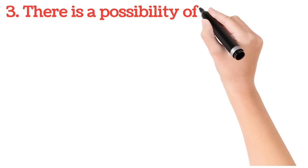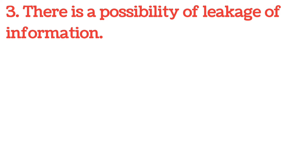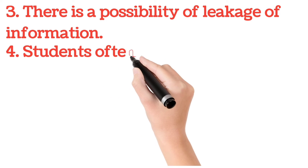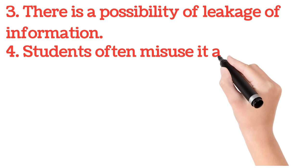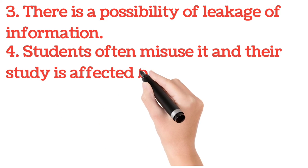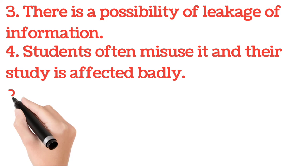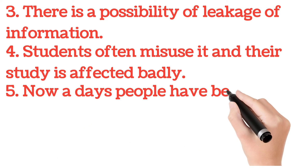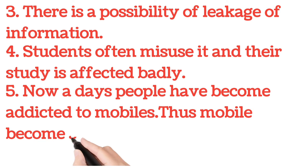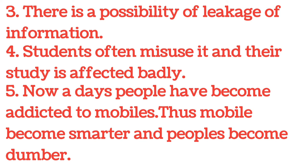There is a possibility of leakage of information. Students often misuse it and their study is affected badly. Nowadays, people have become addicted to mobiles. Thus, mobile becomes smarter and people become dumber.